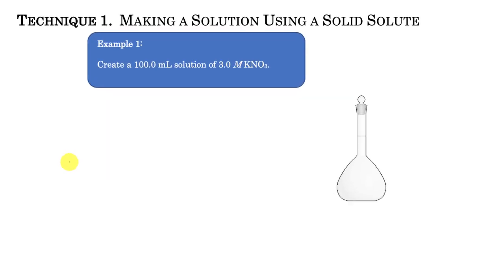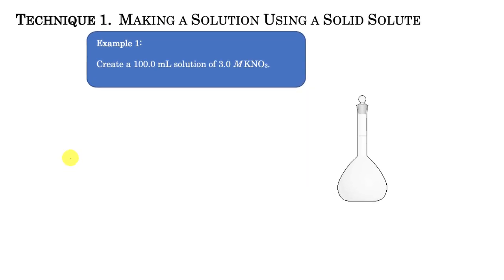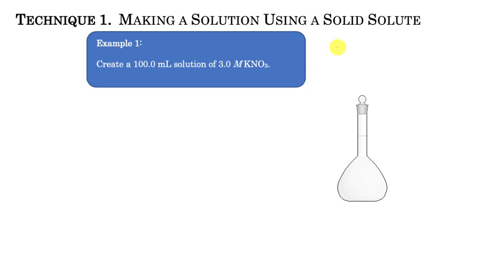Let's start with the first technique, which is making a solution using a solid solute. You're going to start with solid material and dissolve it into water to a desired volume, trying to achieve a particular molarity. For example, I'm going to create a 100 milliliter solution of 0.3 molar potassium nitrate, starting with solid potassium nitrate.